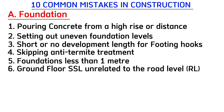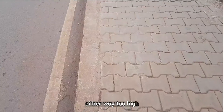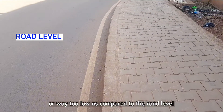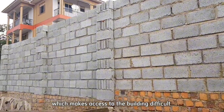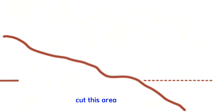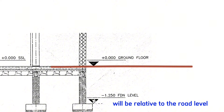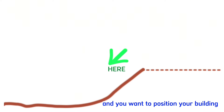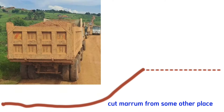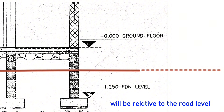Common mistake number six is making the ground floor structure slab level completely unrelated to the road level. Most contractors make this slab level either way too high or way too low compared to the road level, making access to the building difficult. When the land is sloping, cut and dispose of soil to bring the ground floor structure slab level relative to the road level, or alternatively fill with maram from elsewhere so that the ground floor structure slab level is relative to the road level and access to the building is easy.